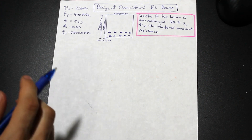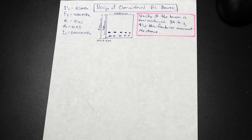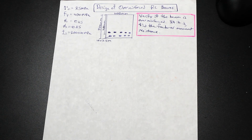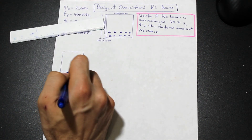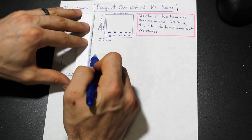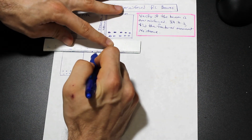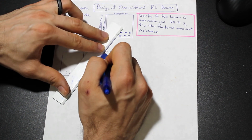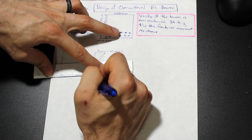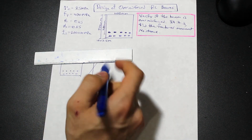The first thing we're going to do is start with the assumption that the beam is balanced. If you don't know what a balanced condition means, check the description for a linked video on failure modes of reinforced concrete. In the balanced condition, the yield strain in the steel is reached at the same time as the concrete strain. So at the top fiber we have ε_c max, and the yield strain equals the actual strain in the steel.